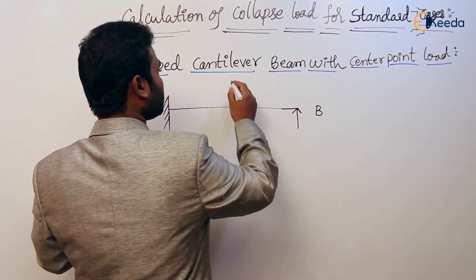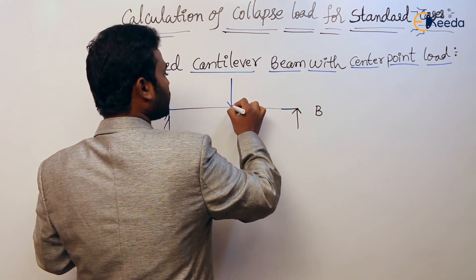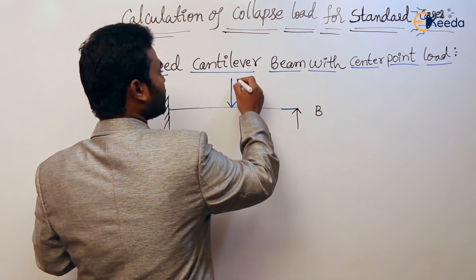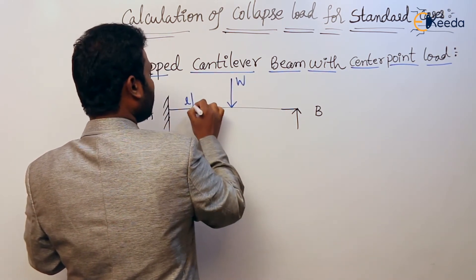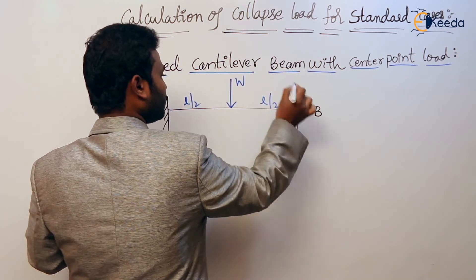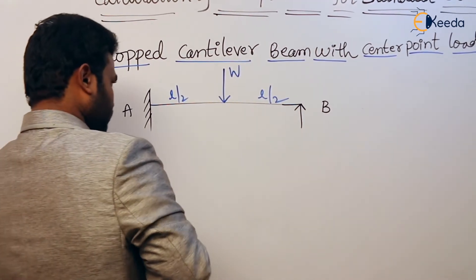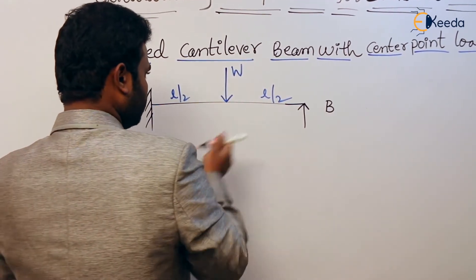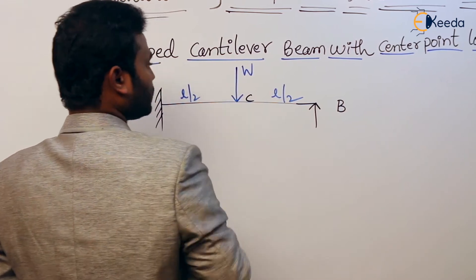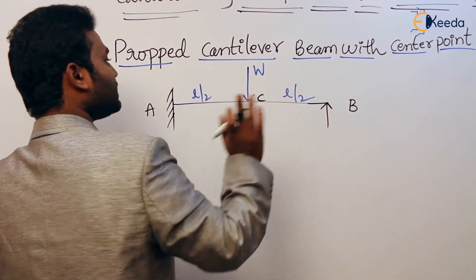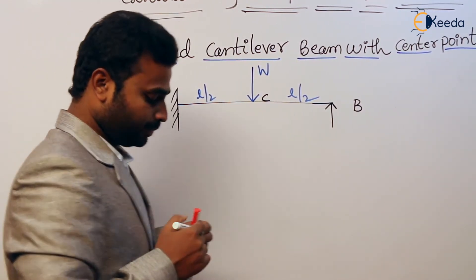For this beam, we have a point load W applied exactly at the center C, with AC equal to L/2 and CB equal to L/2. So the total span is L, divided equally at the center point C.